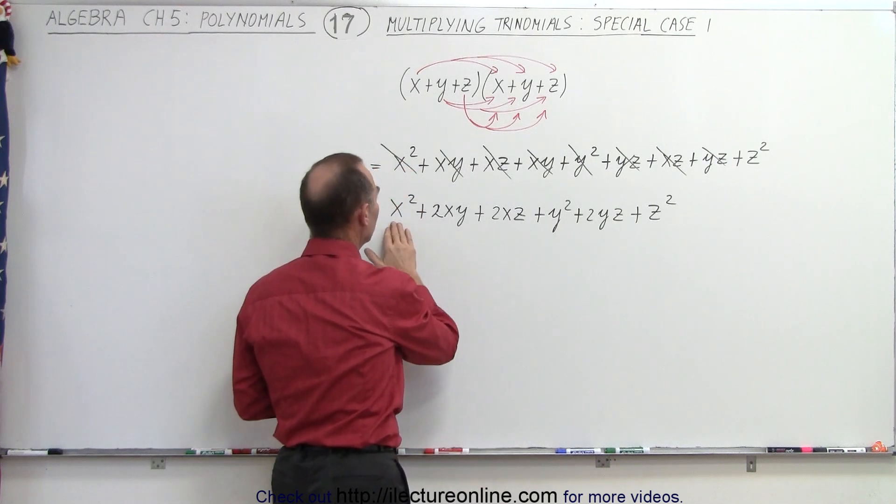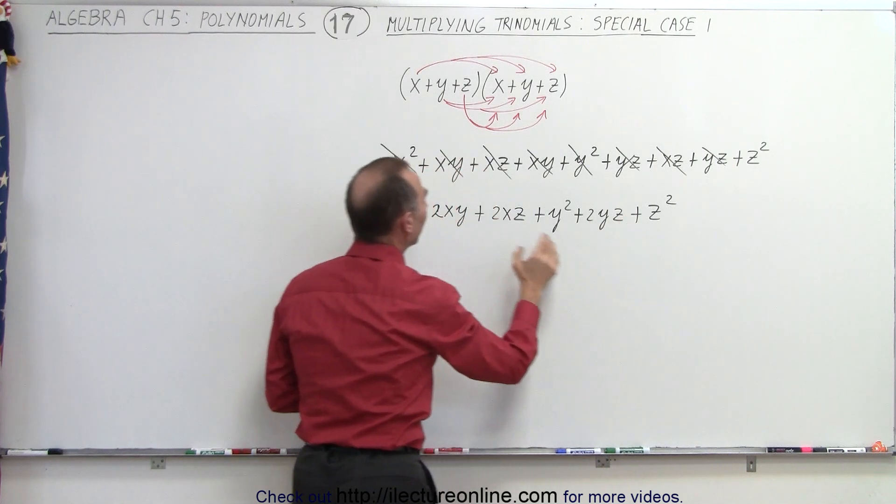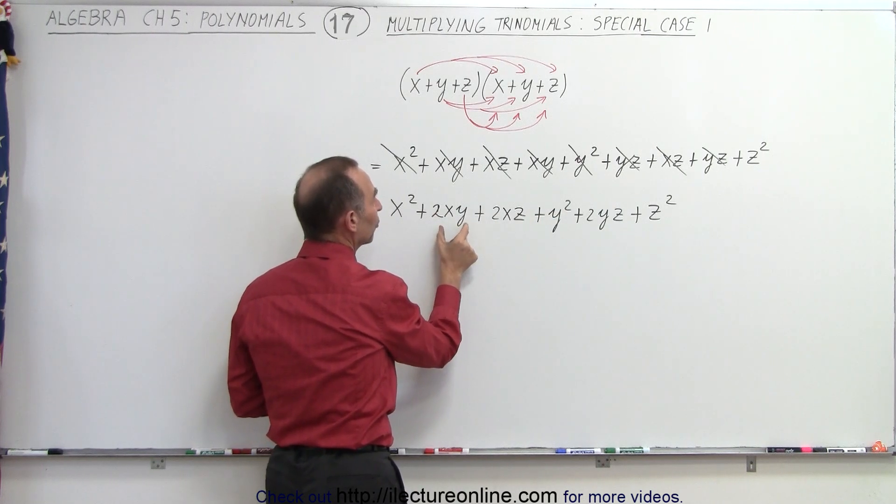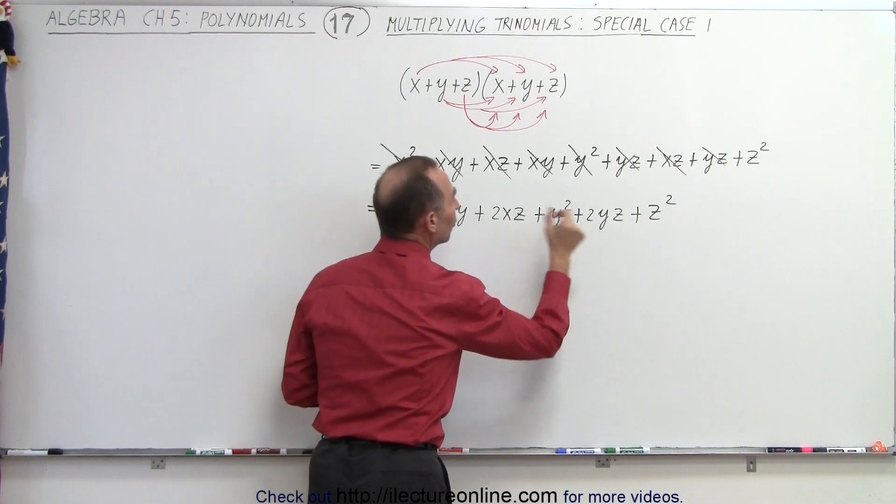So the six terms are made up of the three square terms, I should say, and the three terms that have a two with a product of two variables: 2xy, 2xz, and 2yz.